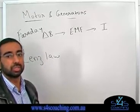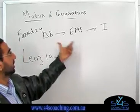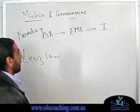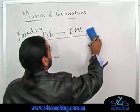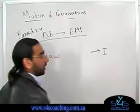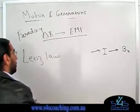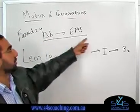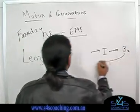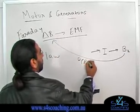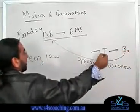Then we have Lenz's Law. The difference is that Lenz's Law tells you the directional relationship between the induced magnetic field, the voltage, and the current when a conductor is placed in a changing magnetic field. Faraday's Law only tells you that a changing B will produce an EMF. We also know that this EMF will produce a current, and that current produces a magnetic field — we call this B2.